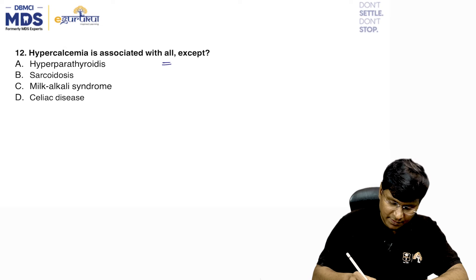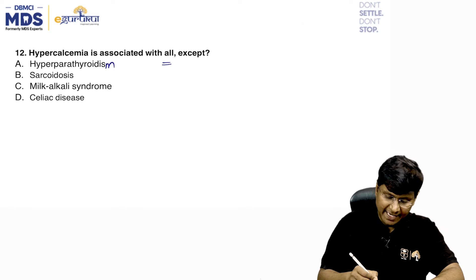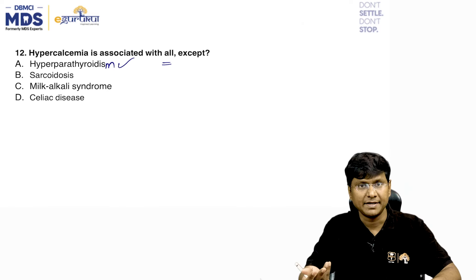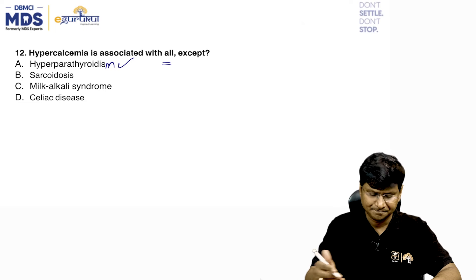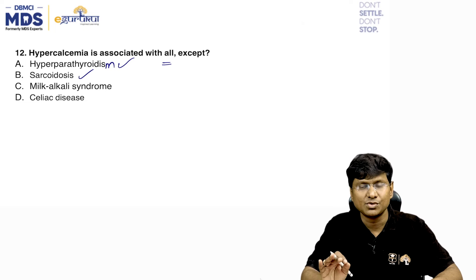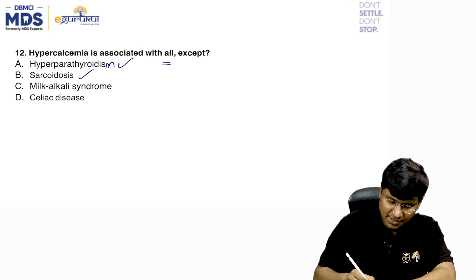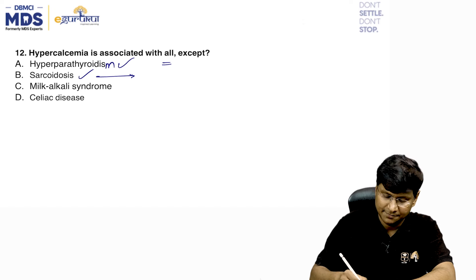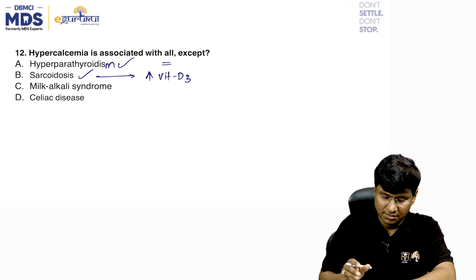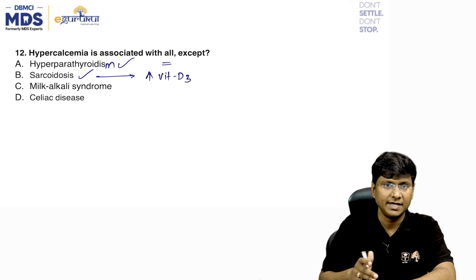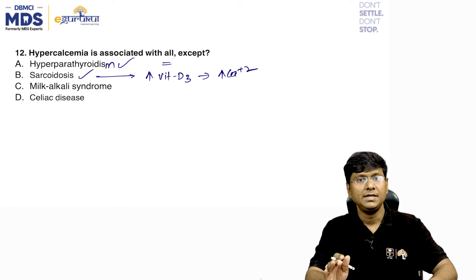Next question: hypercalcemia is associated with all except — hyperparathyroidism, sarcoidosis, milk-alkali syndrome, or celiac disease? Hyperparathyroidism causes hypercalcemia through increased parathormone-driven osteoclastic activity and bone resorption. Sarcoidosis is also associated with hypercalcemia: it is a non-caseating granuloma with increased vitamin D3 levels that raise calcium.